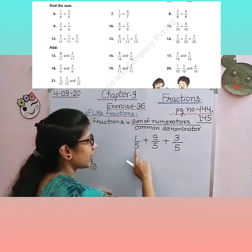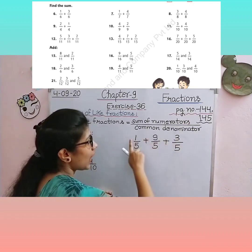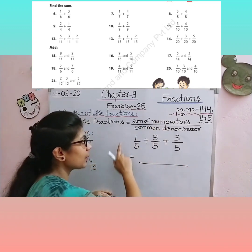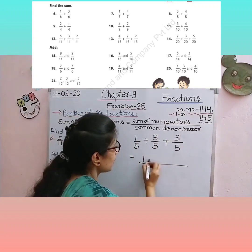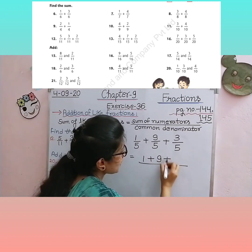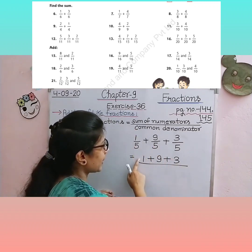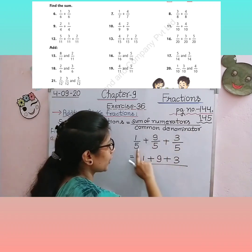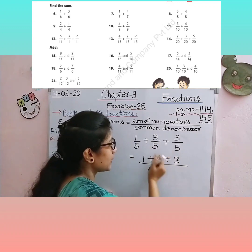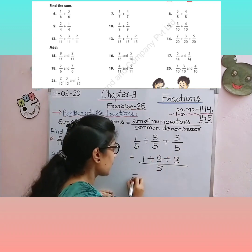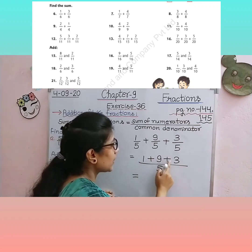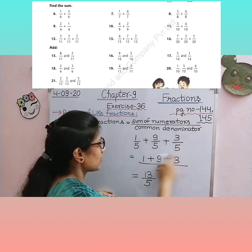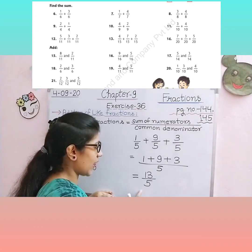Ye like fractions hain kyunki inke denominators same hain aur numerators alag alag hain. Ab hum inko kaise add karein? Formula pe rakhte hain — sum of numerators: 1 + 9 + 3. Common denominator kya hai? Denominator toh sabmein same hai — common hai 5. So the answer is 13 upon 5.